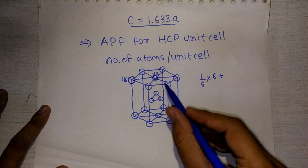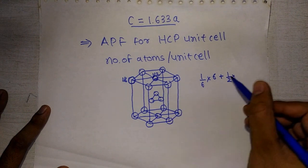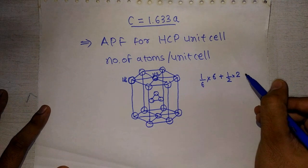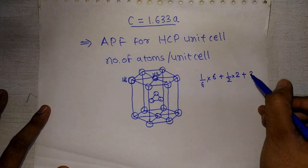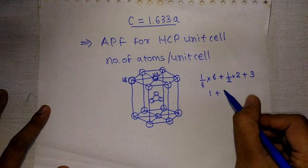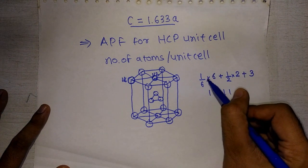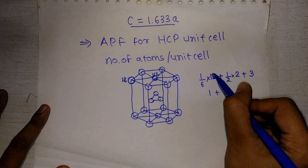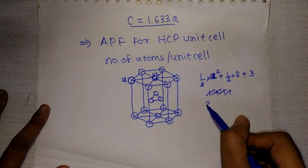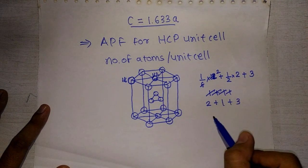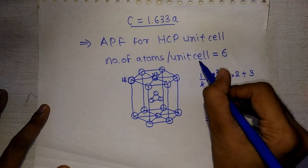We also have face-centre atoms shared by 2 unit cells, so each contributes 1/2. We have 2 such atoms, giving 1/2 × 2 = 1. Plus we have 3 whole interior atoms not shared by any other unit cell. So the total number of atoms per unit cell is 1/6 × 12 + 1/2 × 2 + 3 = 2 + 1 + 3 = 6.